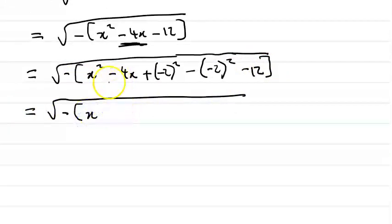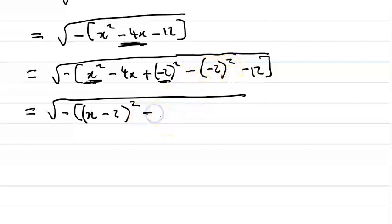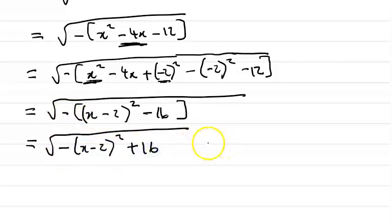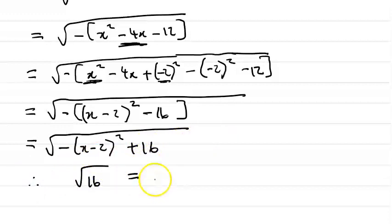This gives us the square root of minus times (x minus 2) all squared, then minus (minus 2) squared is minus minus 4, and minus 12 gives minus 16. When we take the minus outside the brackets we get the square root of minus (x minus 2) squared plus 16. Therefore the maximum value corresponds to the square root of 16, which equals 4.